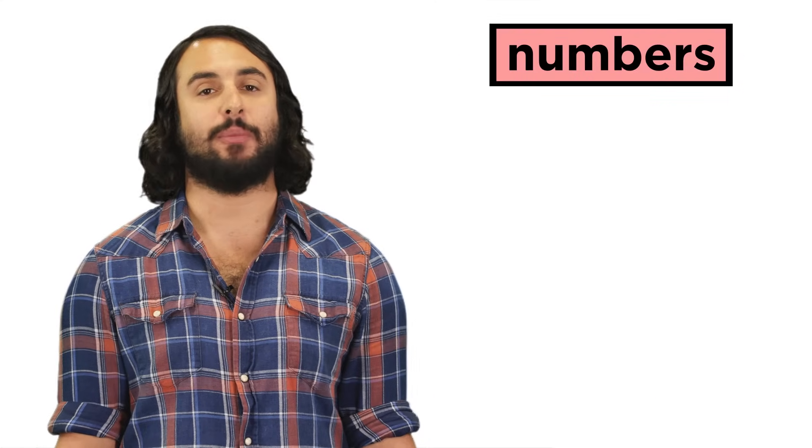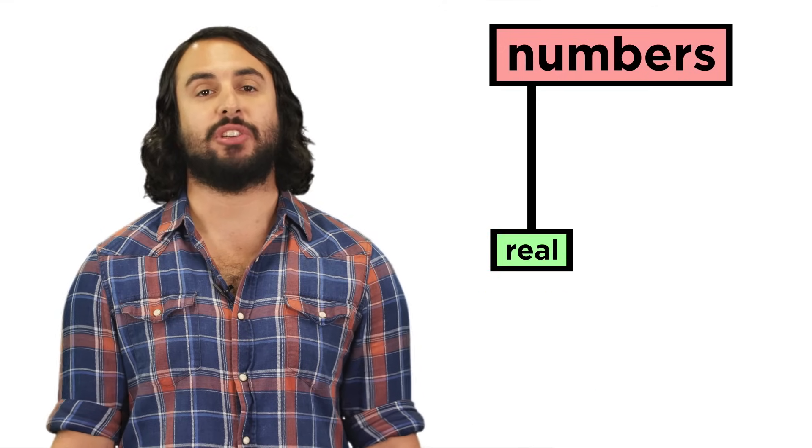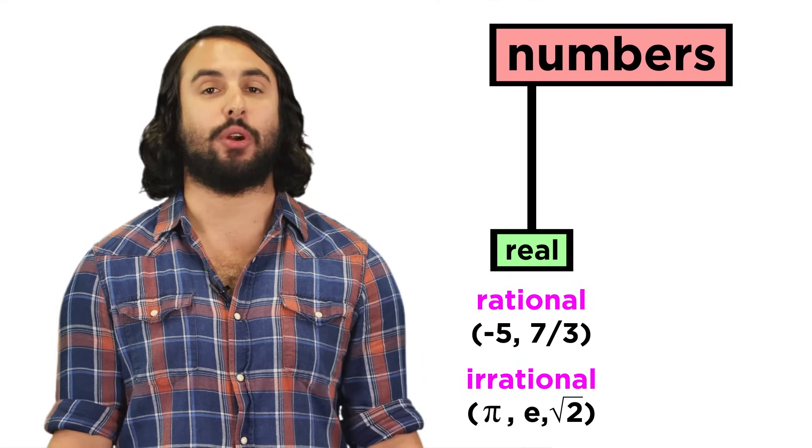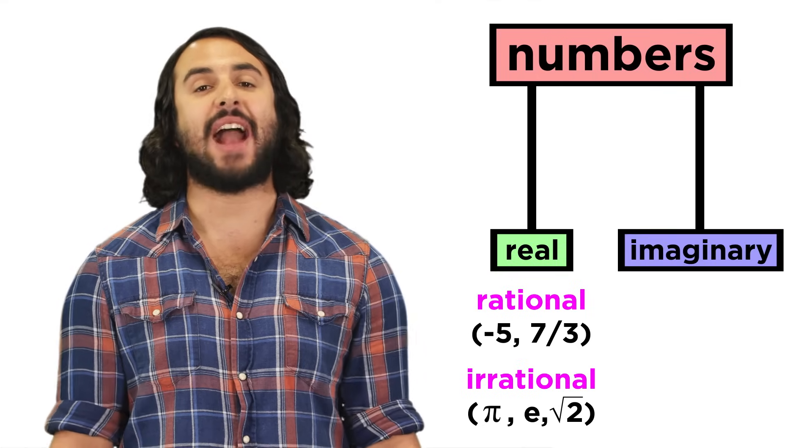When we were discussing the types of numbers, we said that there are real numbers, which are all the rational and irrational numbers like negative five, or pi, or seven thirds, but there are also imaginary numbers.